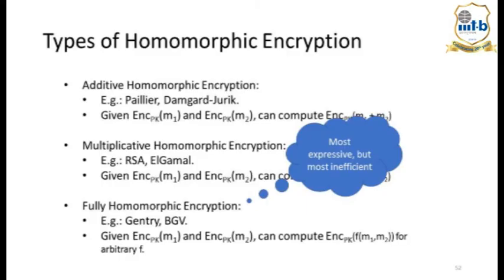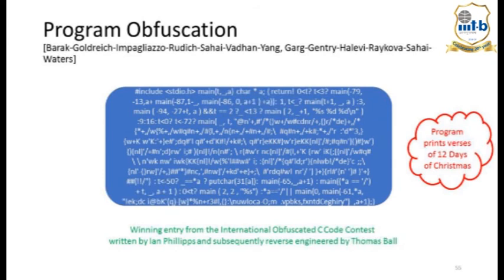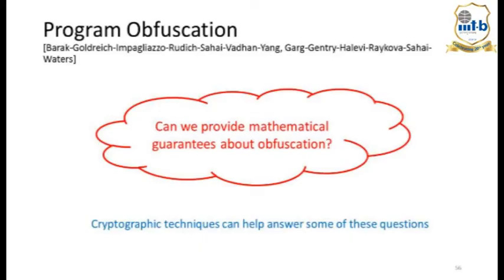Program obfuscation is a powerful tool from a software engineering perspective — software companies don't want people to know their code. If you had a way to obfuscate code, you could distribute it without revealing what it actually does. Cryptography is useful in understanding what's possible in obfuscation. My research group works on two problems: non-malleable codes and privacy amplification.